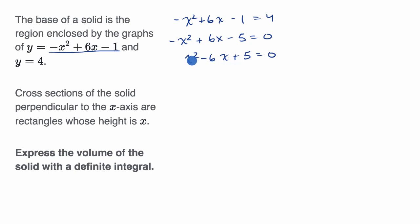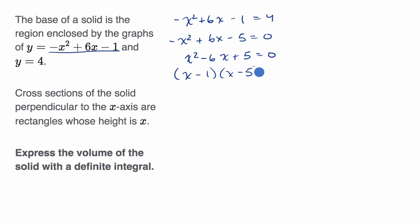This is pretty straightforward to factor. Negative one times negative five is five, and negative one plus negative five is negative six. So it's going to be x minus one times x minus five equals zero. And so these intersect when x equals one or x equals five.